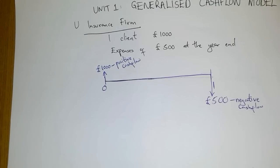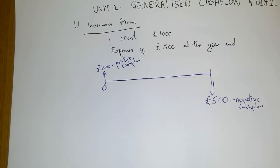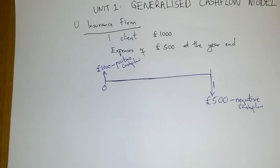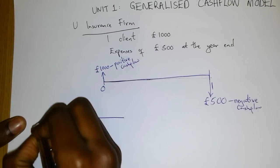At times, cash flows may be a little complicated. You can have cash flows where you do not know the timing — that is, you do not know when the cash will come in. At times you may also not know the amount of cash to expect. I'll give you a basic example to explain that.